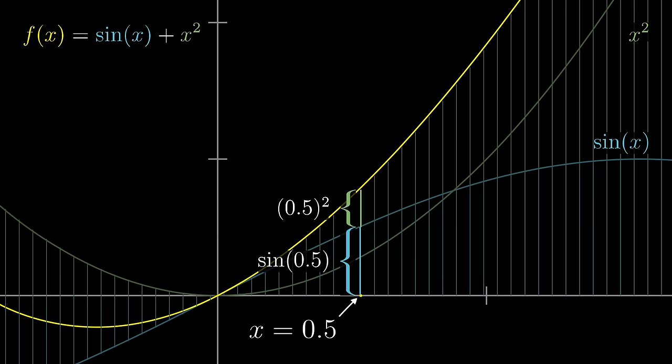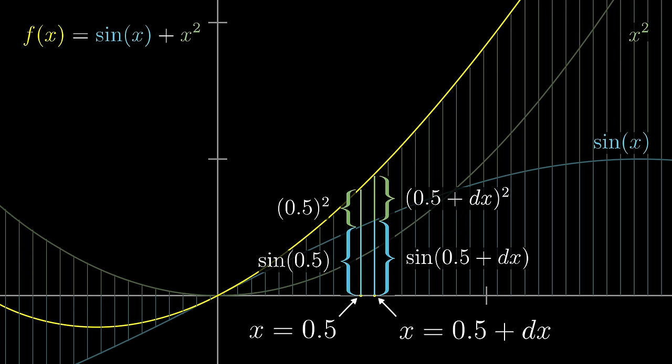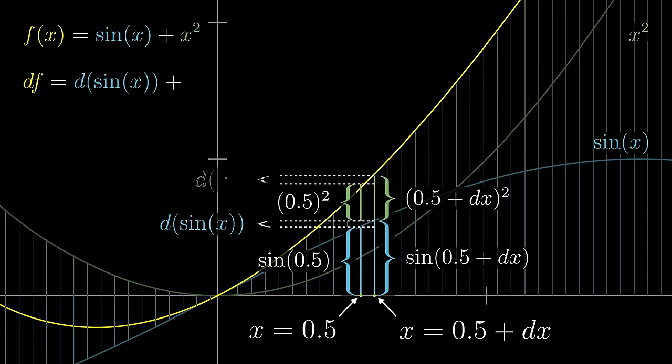Now for the derivative, you want to ask what happens as you nudge that input slightly, maybe increasing it up to 0.5 plus dx. The difference in the value of f between those two places is what we call df. And when you picture it like this, I think you'll agree that the total change in the height is whatever the change to the sine graph is, what we might call d sine of x, plus whatever the change to x squared is.